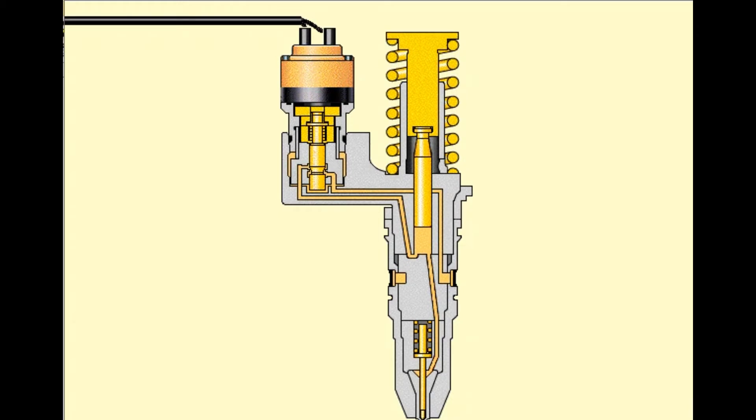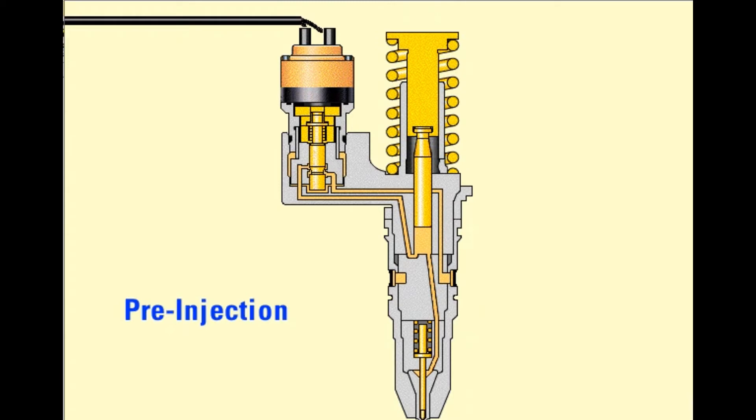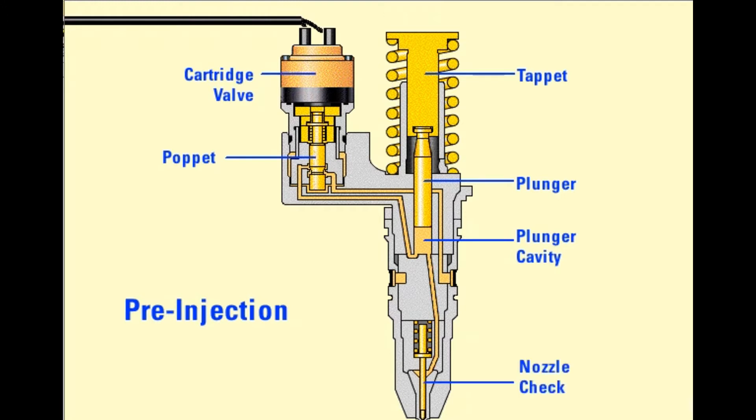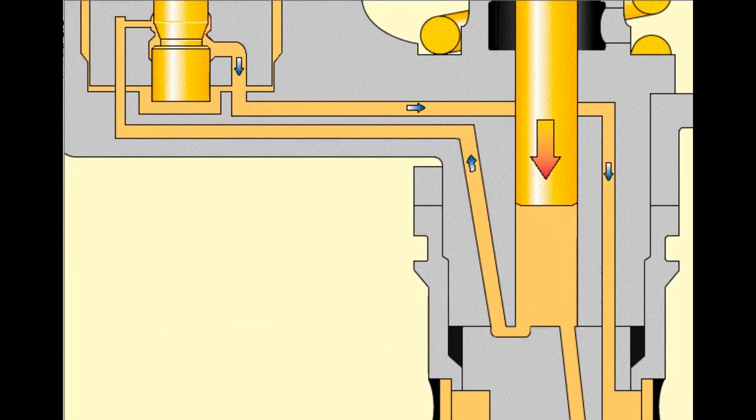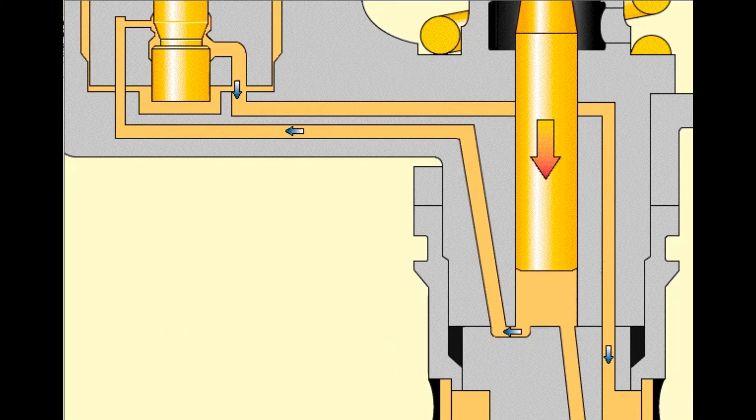There are four stages in the operation of the MEUI: pre-injection, injection, end of injection, and fill. The first stage, pre-injection, starts with the plunger and tappet at the top of their stroke. The plunger cavity is full of fuel. The poppet in the cartridge is open and the nozzle check is closed. Fuel leaves the plunger cavity when the rocker arm pushes down on the tappet and plunger. Fuel blocked by the closed nozzle check flows past the open poppet to the fuel supply passage in the cylinder head. As long as the solenoid on the cartridge valve is not energized, the poppet remains open and the fuel from the plunger cavity continues flowing into the fuel supply passage.